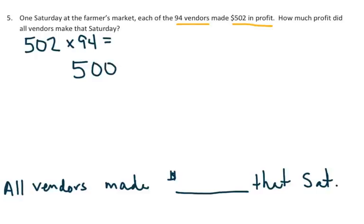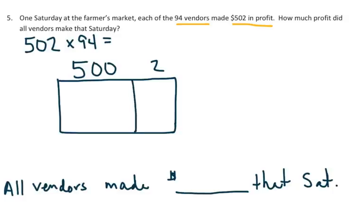So this one's a little bit different because I have nothing in the tens place. So we don't have a column for that because there is no tens and that's fine. And I have 94. I'm going to do my partial products here. I made a mistake again. This is actually a 90, not 94, 90 and 4.